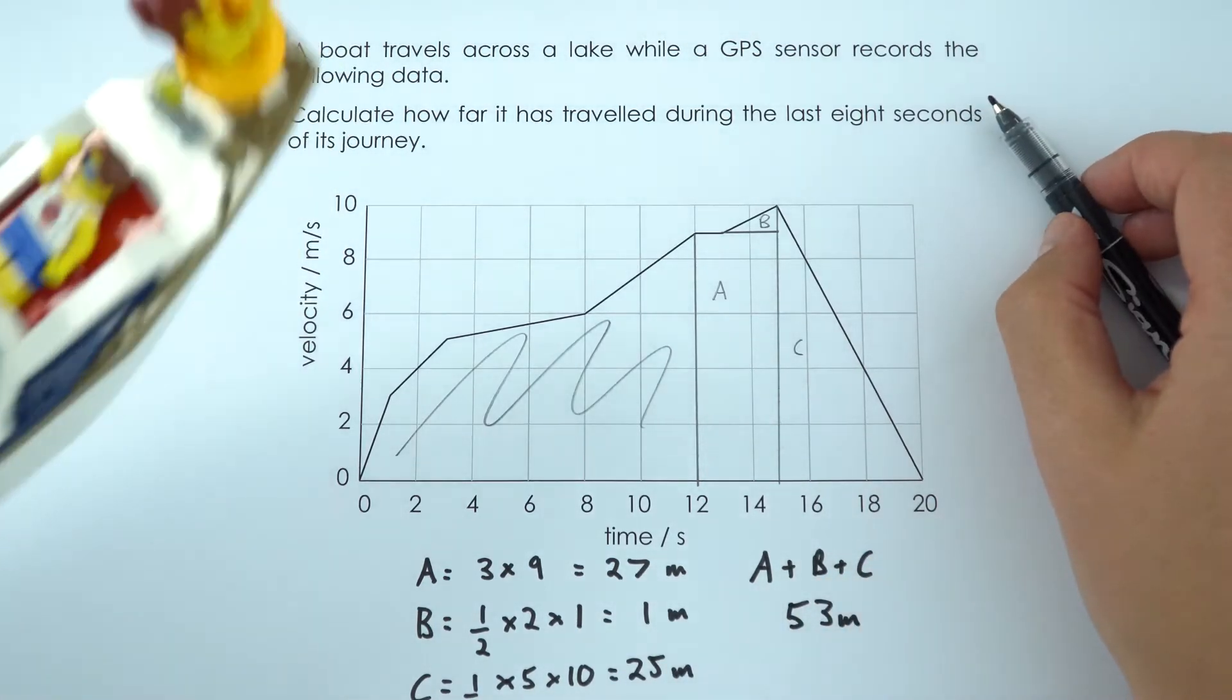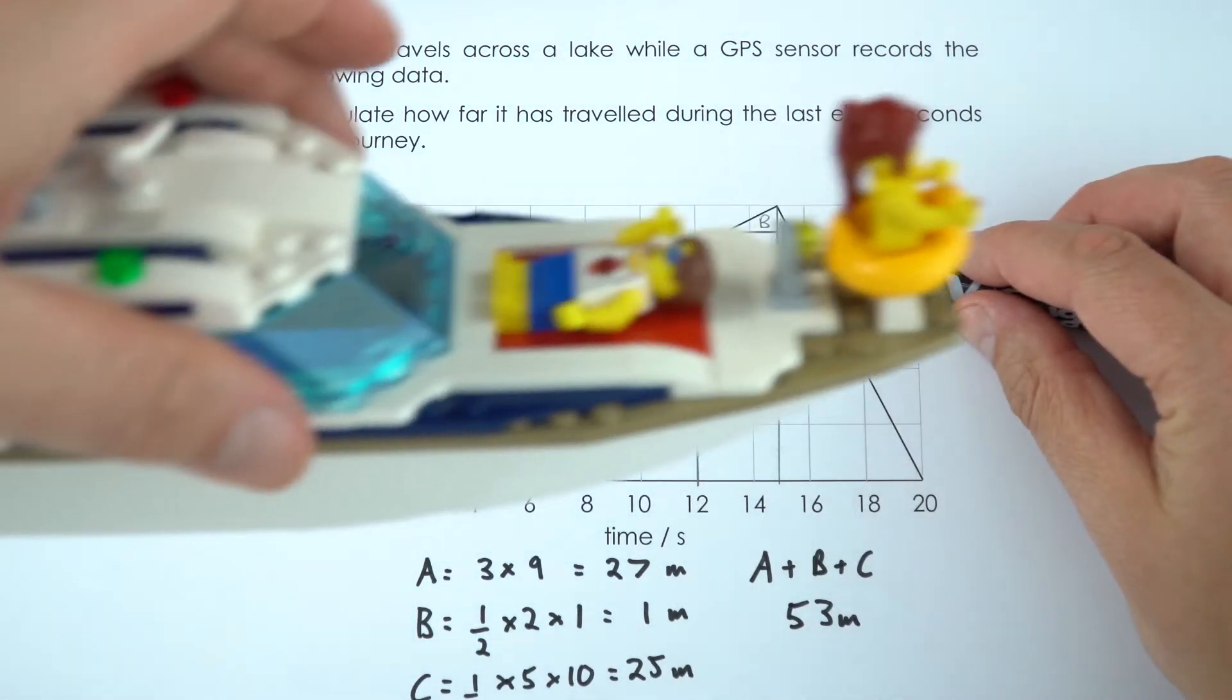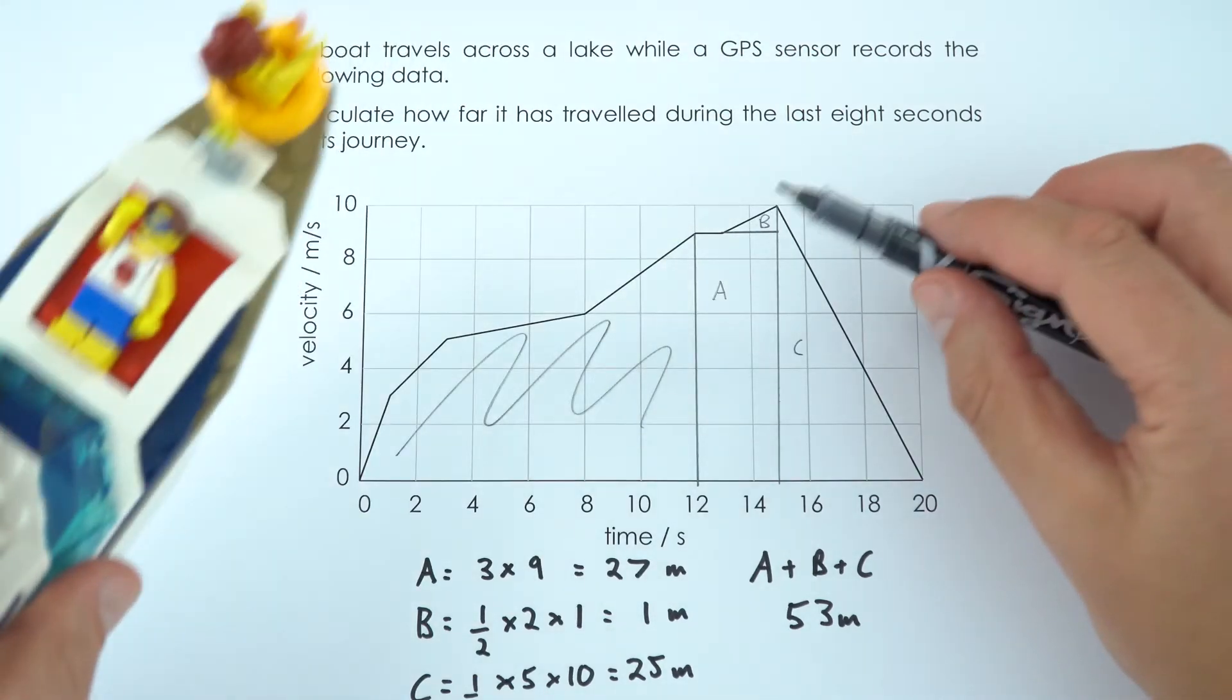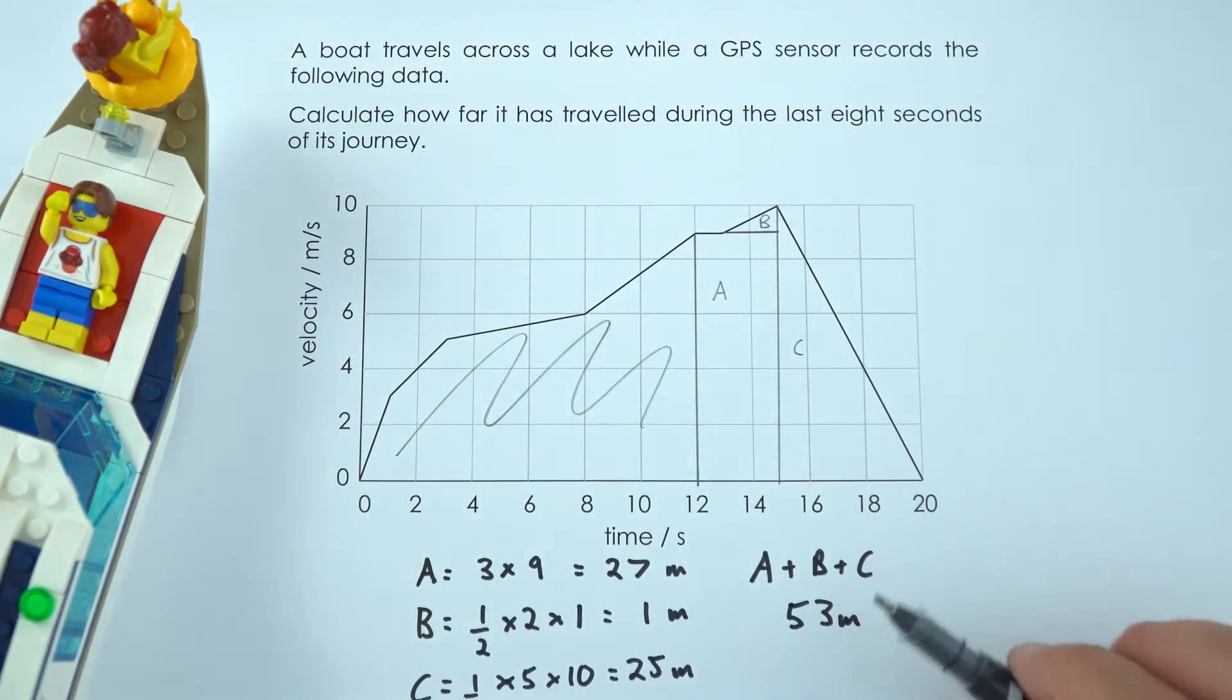So as this boat was slowing, well first of all it was going at a constant velocity then it accelerated and then it decelerated. During that time over the last eight seconds it travelled a total distance of 53 meters.